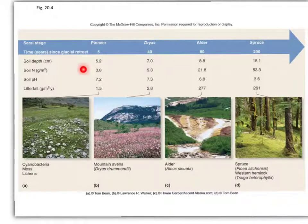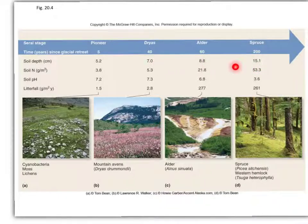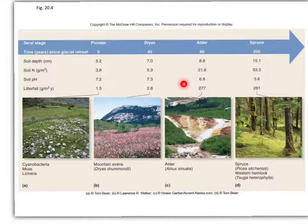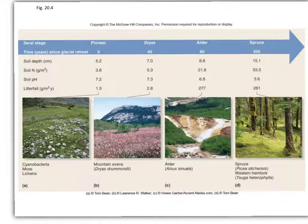The soil depth in the pioneer stage is much less than in later communities — the spruce community has three times as much soil as the pioneer stage. Nitrogen increases quite a bit through these different stages. The pH goes from being kind of acidic to more acidic, which is interesting. And the depth and amount of litter fall certainly has increased quite a bit.